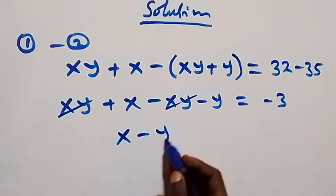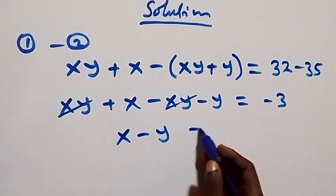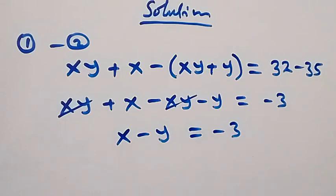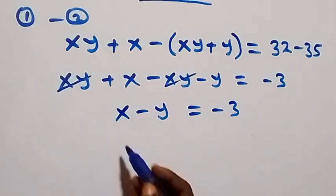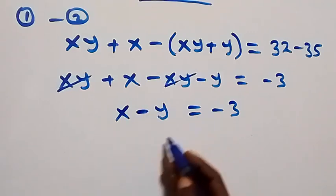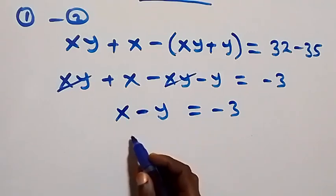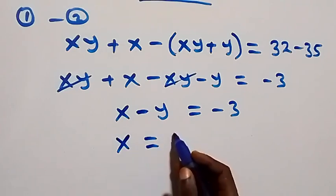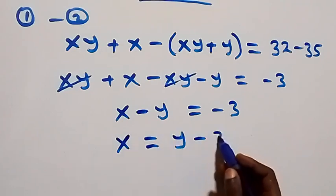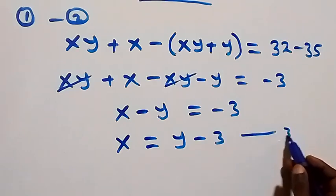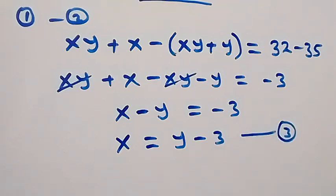xy minus xy cancels, leaving us with x minus y equals negative three. Making x the subject, we take negative one to the other side — so x equals y minus three. Label this as equation three.